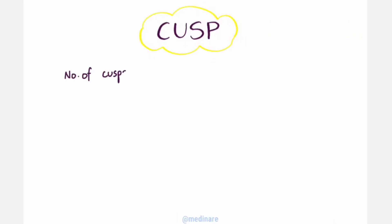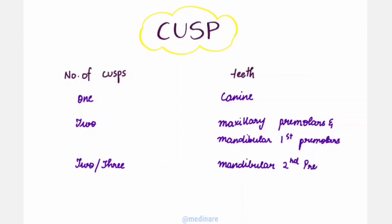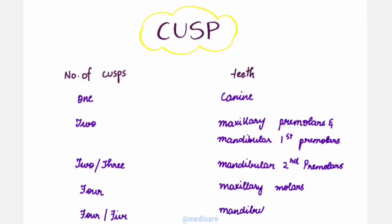The various number of cusps present in each tooth: one cusp is present in canine; two cusps in maxillary premolars and mandibular first premolars; two or three cusps in mandibular second premolars; four cusps in maxillary molars; and four or five cusps in mandibular molars.